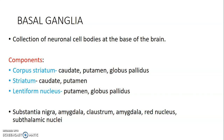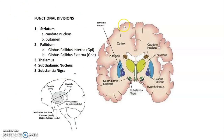Other parts of the basal ganglia include the substantia nigra, amygdala, claustrum, red nucleus, and subthalamic nucleus. To summarize: corpus striatum involves all three structures; striatum is only caudate and putamen; lentiform nucleus has putamen and globus pallidus. On the diagram, you can see the caudate nucleus, thalamus, putamen, and globus pallidus.